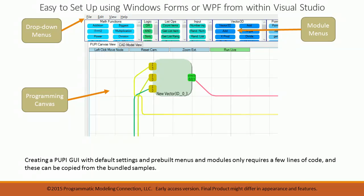Setting up a PAPI GUI is easy. You need to create a Windows form and then initialize the menus and the canvas with a few lines of code, available in the PAPI sample tutorials. Pre-built visual programming modules and menus are available that can be instantiated with just one line of code.